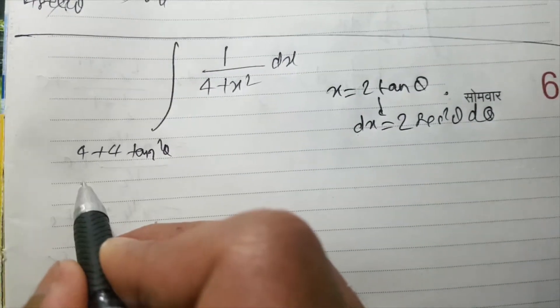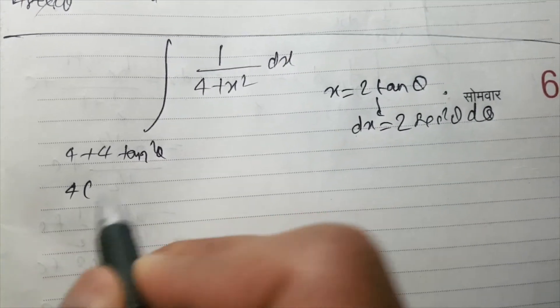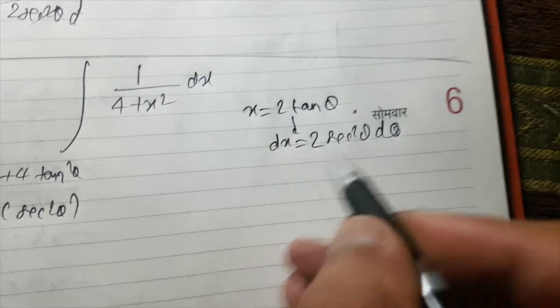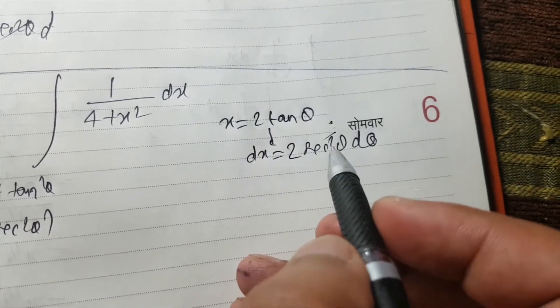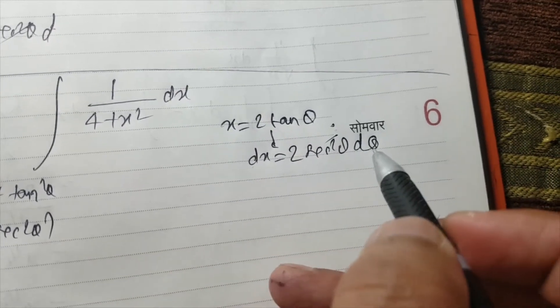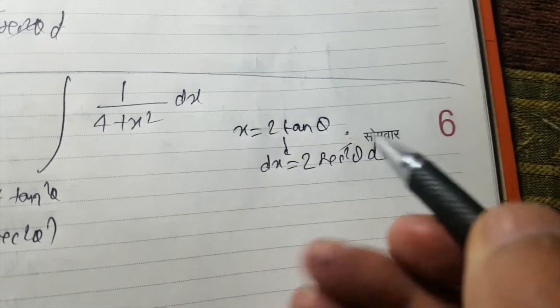So here we will get 4, 1 plus tan square theta is sec square theta. So this will get canceled out and we will be only left with the integral of d theta which is theta. That's why I am doing it.